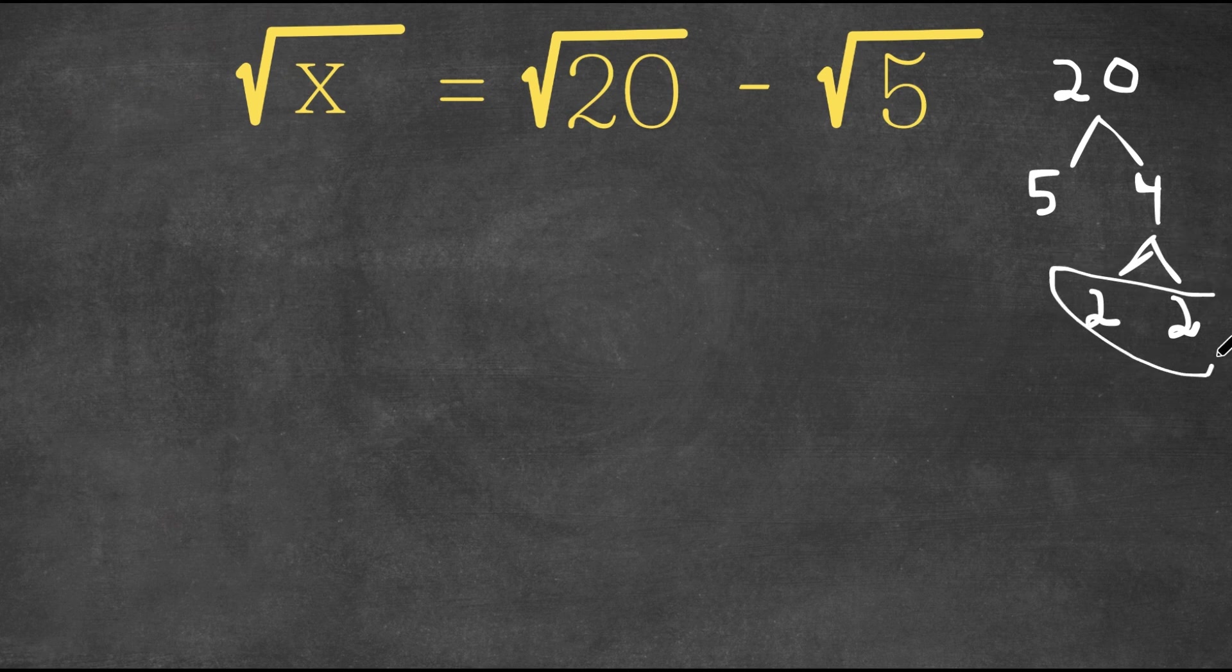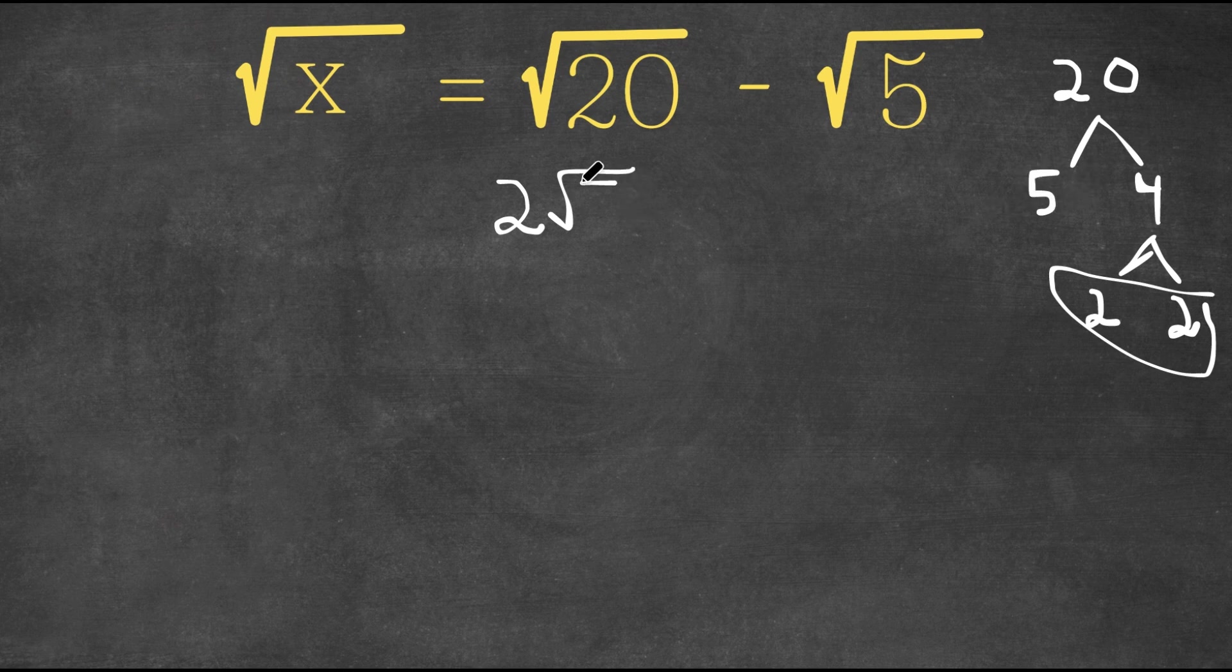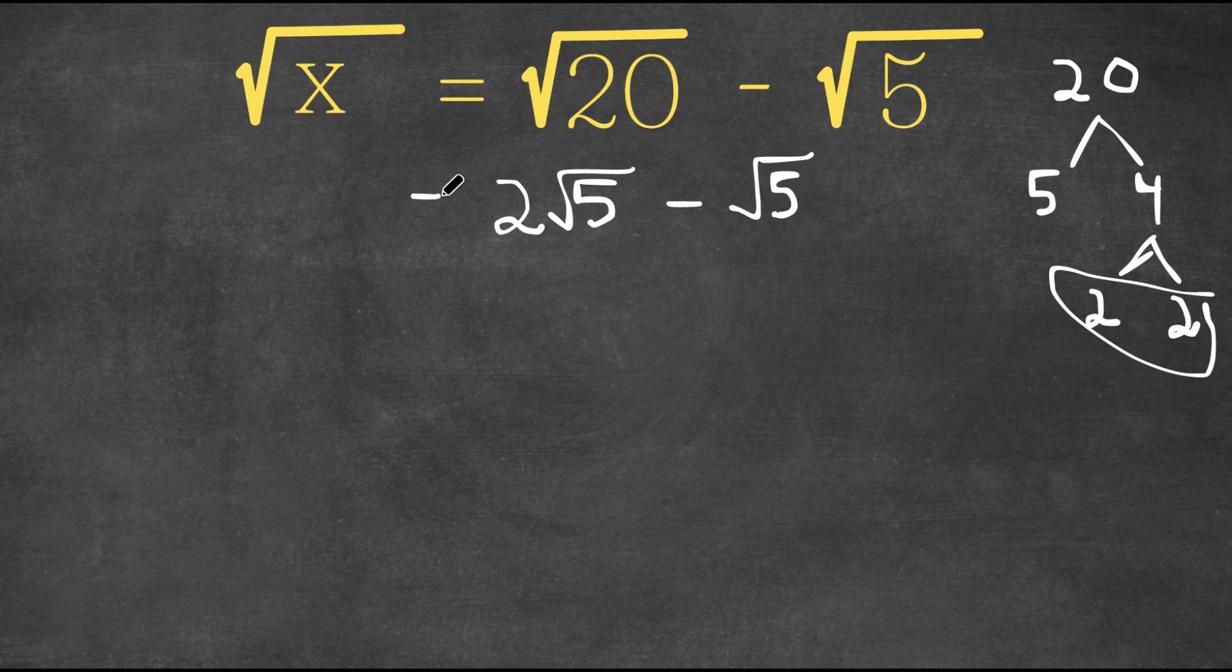So now these two are a group, so this 2 is going to be in our outside roots. And 5, because this is left alone, this is going to be inside the radical. So now we have 2 root 5 minus square root of 5. This is equal to the square root of x.